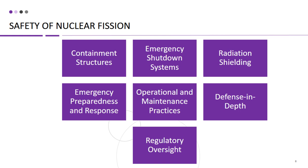Nuclear power plants have comprehensive emergency preparedness and response plans in place to address potential accidents or incidents. These plans include procedures for notifying authorities and the public, evacuating and sheltering individuals if necessary, providing medical care, and mitigating the consequences of an incident. Regular training and drills are conducted to ensure that plant personnel and local emergency responders are well prepared to respond to emergencies effectively. Strict operational and maintenance practices are also implemented, including thorough inspections, maintenance of equipment and systems, rigorous quality control, and adherence to established procedures. Plant personnel undergo extensive training and qualification programs to ensure their competence in operating and maintaining the complex systems in the plant.